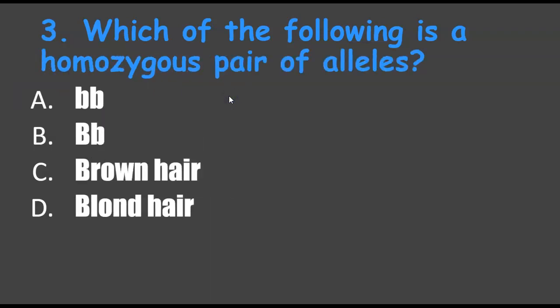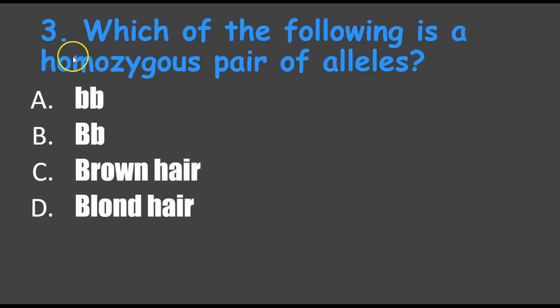Number three: which of the following is a homozygous pair of alleles? When I see homozygous, I think of homogeneous — the same. I'm looking for doubles of the same size, which leads me to answer A.